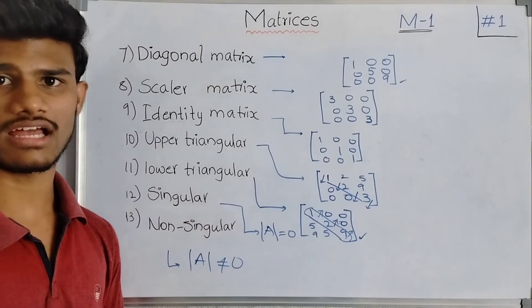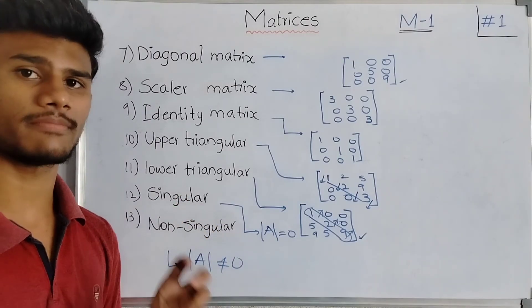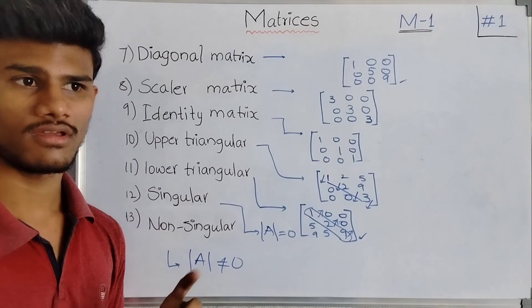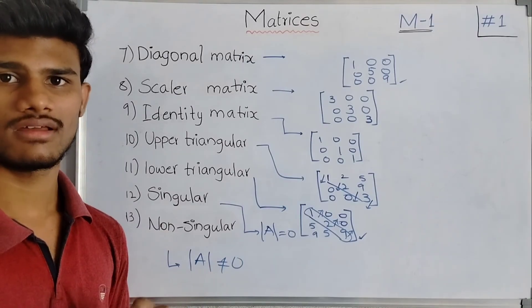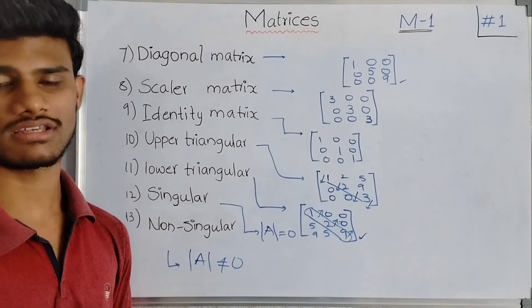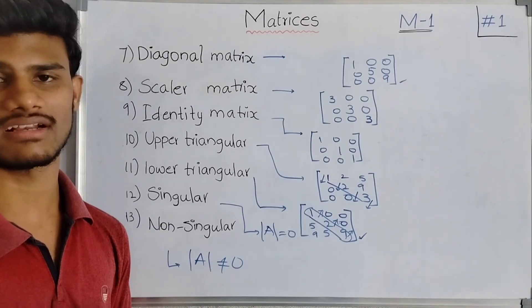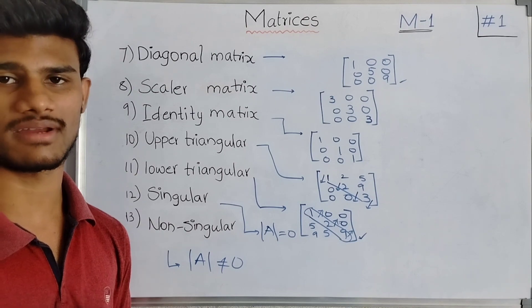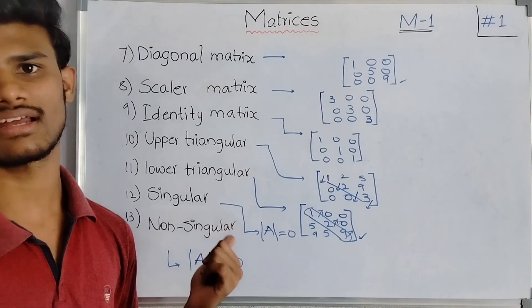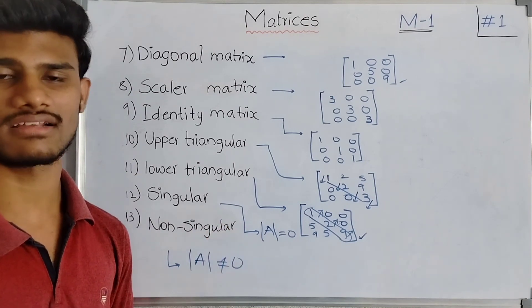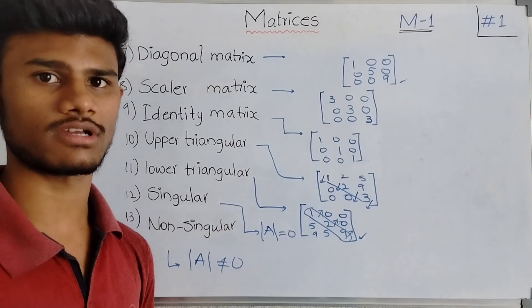In the next class, more complex matrix types will be explained — for example, skew, Hermitian, symmetric, skew-symmetric, and unitary matrix. These matrix types will be explained in the next class.